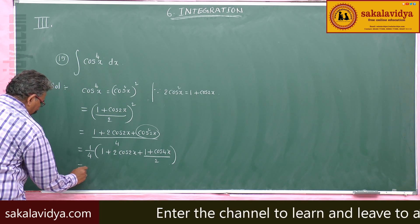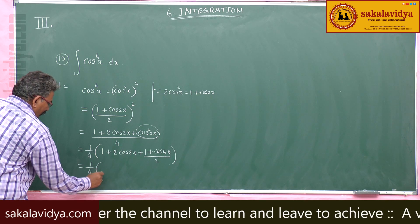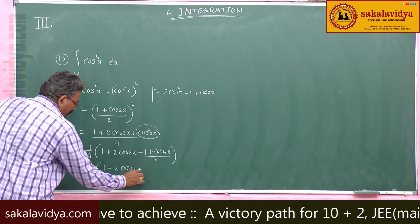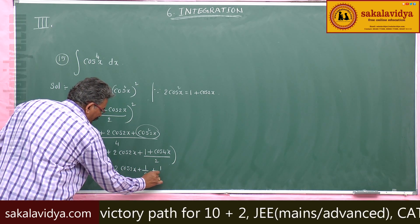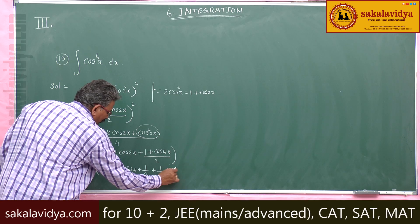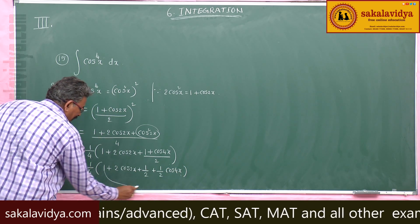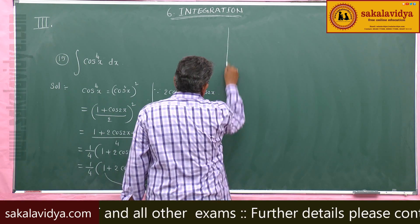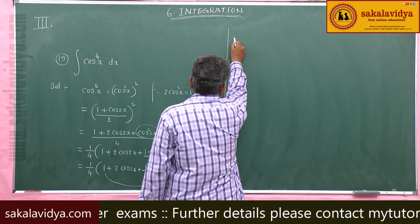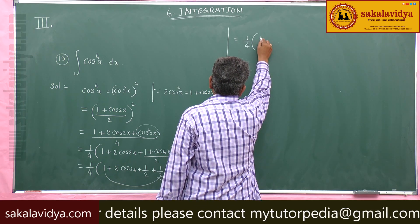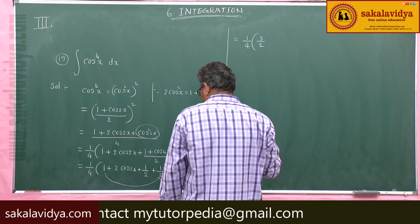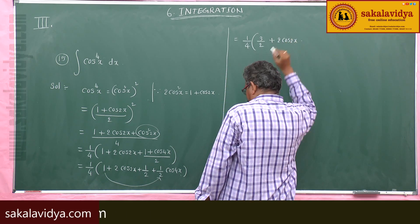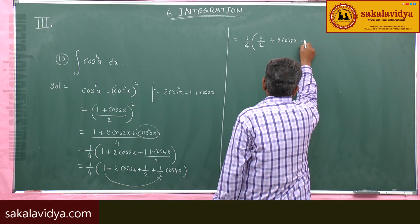So we can write this as 1/4 times 1 plus 2 cos 2x plus 1/2 plus 1/2 · cos 4x. Adding the constants 1 and 1/2, this simplifies to 1/4 times (3/2 plus 2 cos 2x plus 1/2 cos 4x).